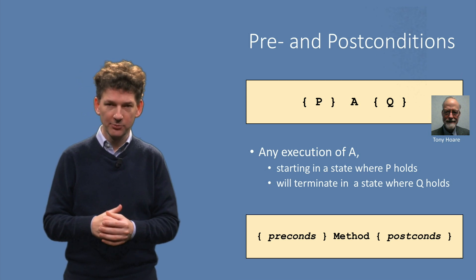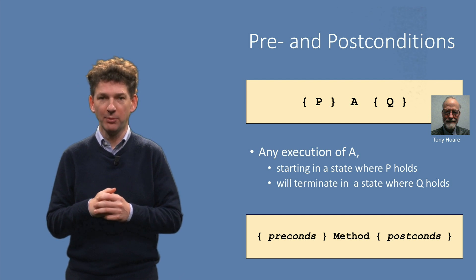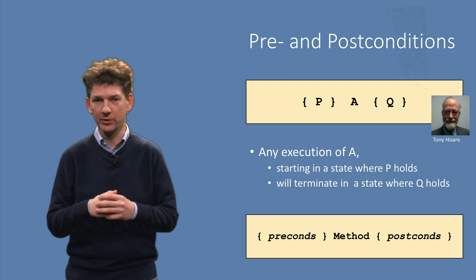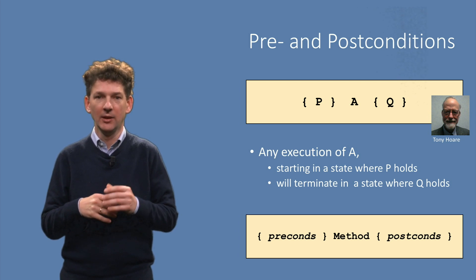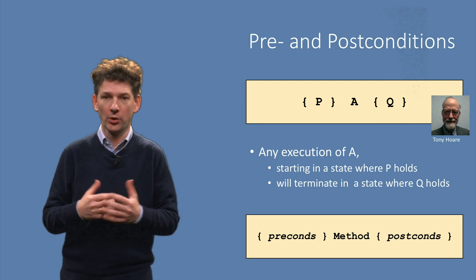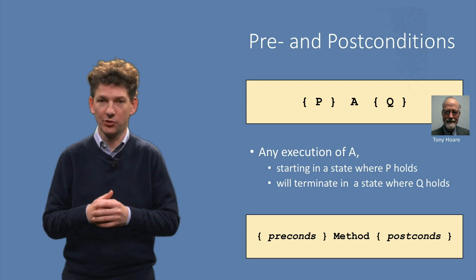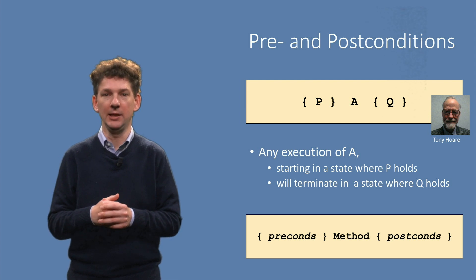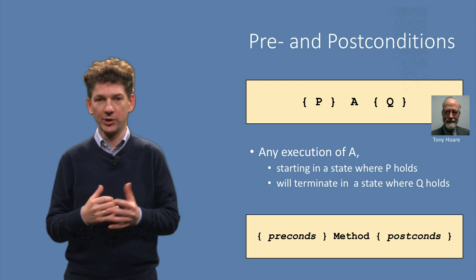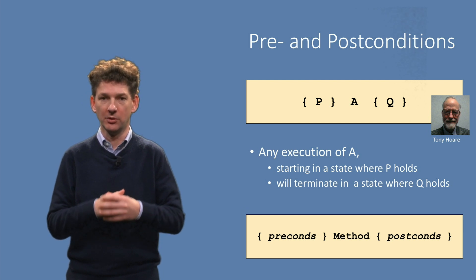Reasoning about programs in terms of assertions was pioneered by Tony Hoare, who in 1980 won a Turing Award for this work. He proposed what have become known as Hoare triples. The meaning, or semantics, of a program A is a proposition Q defining what is guaranteed to be valid after execution of A.